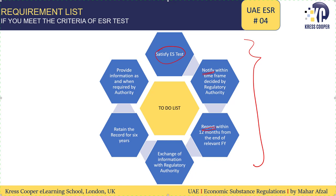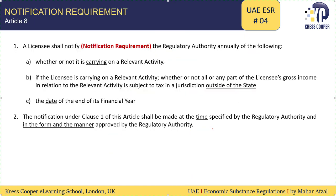First of all is the notification requirement. Article 8 of the Cabinet Decision says that the notification requirement is applicable on an annual basis. Each notification requires the licensee to highlight whether or not it is carrying on any relevant activity.